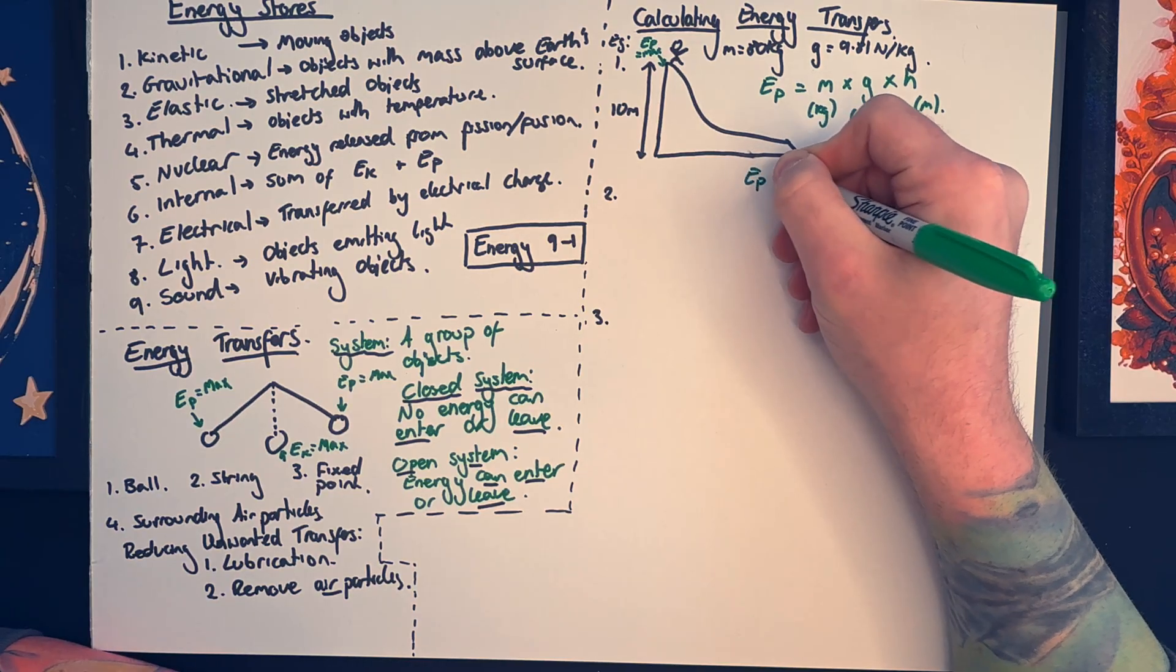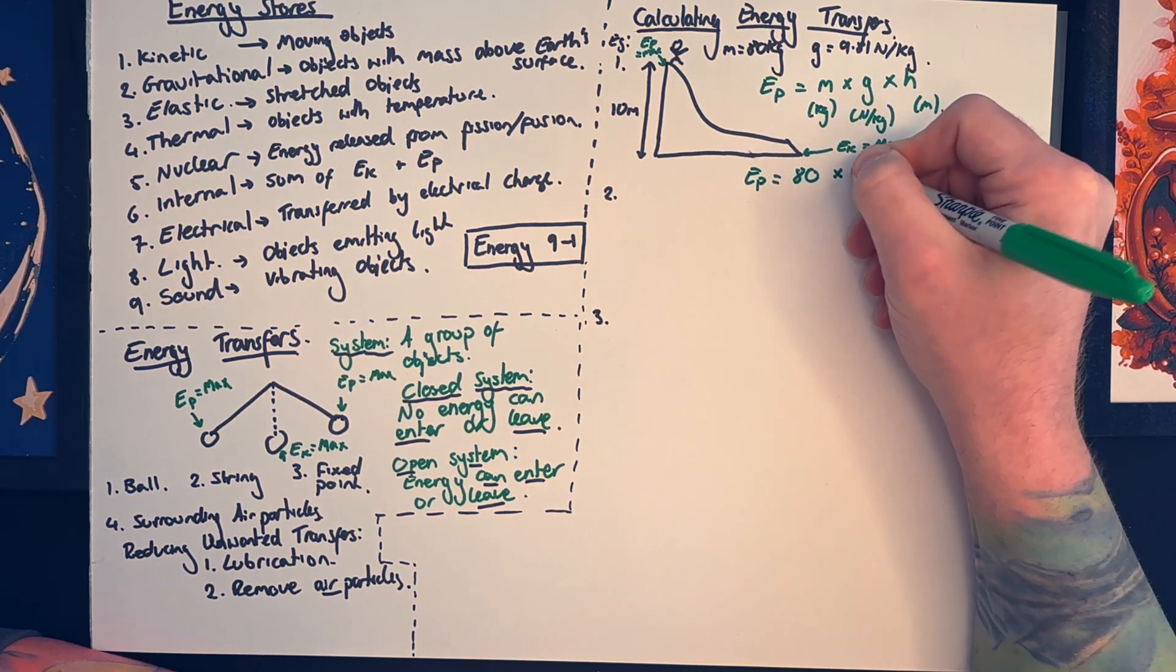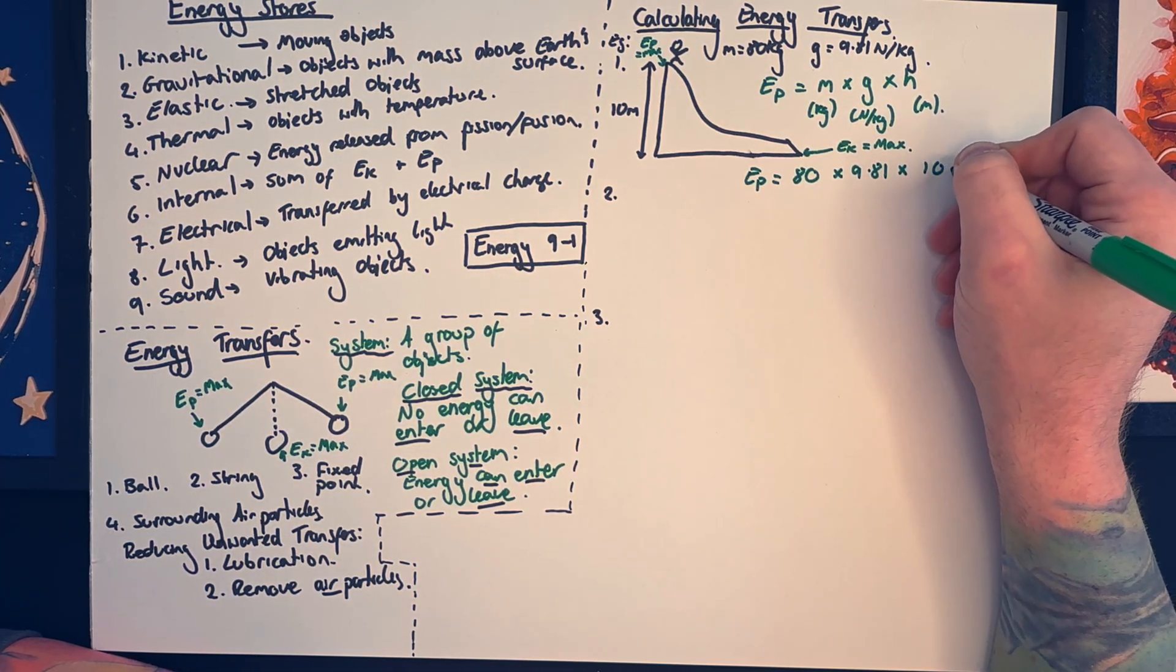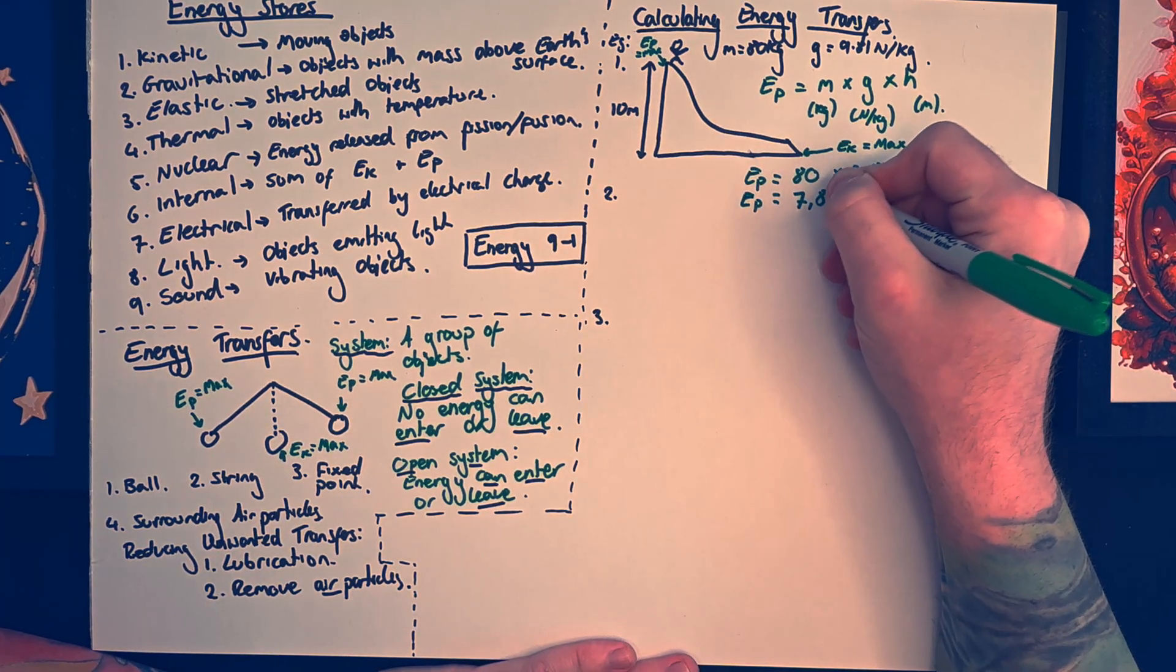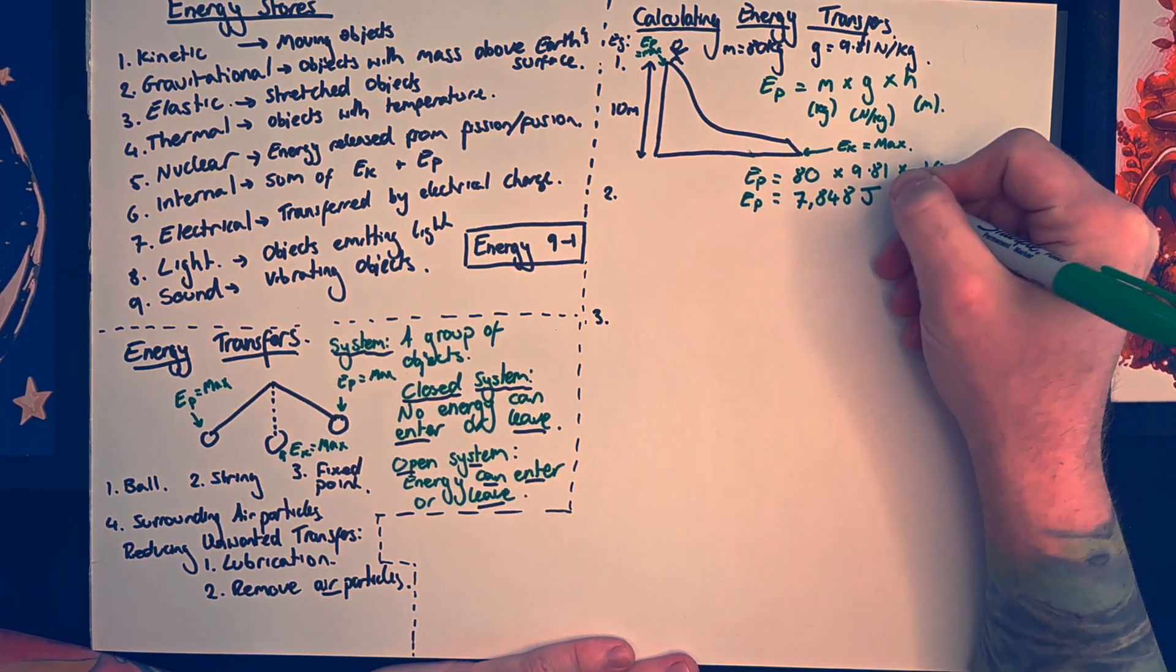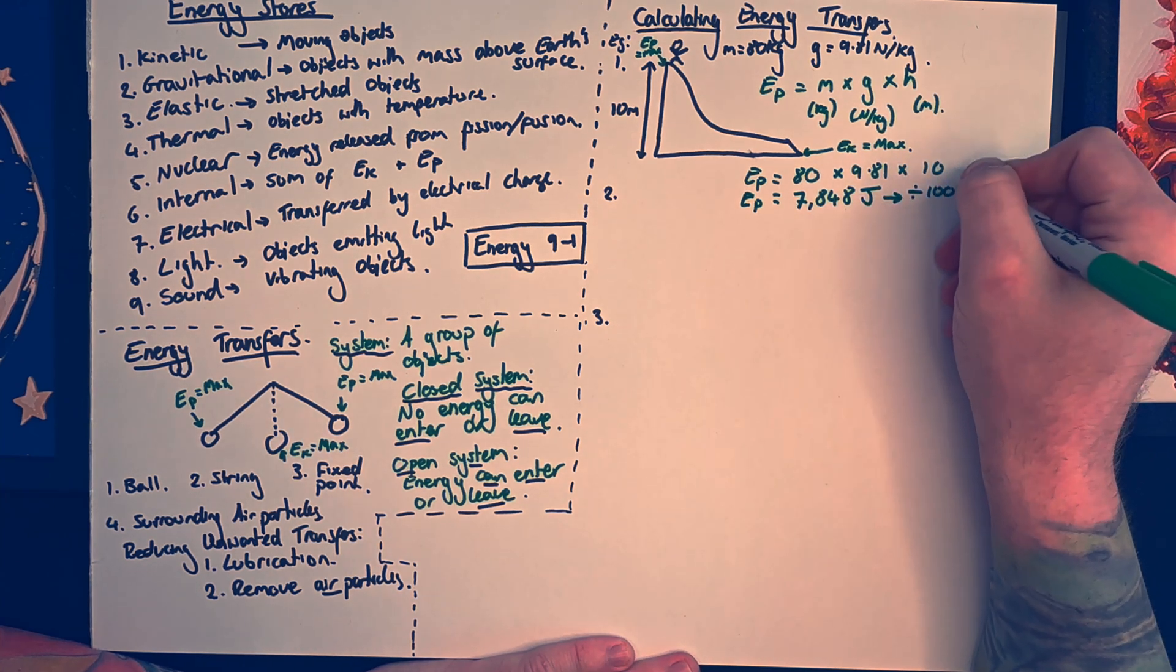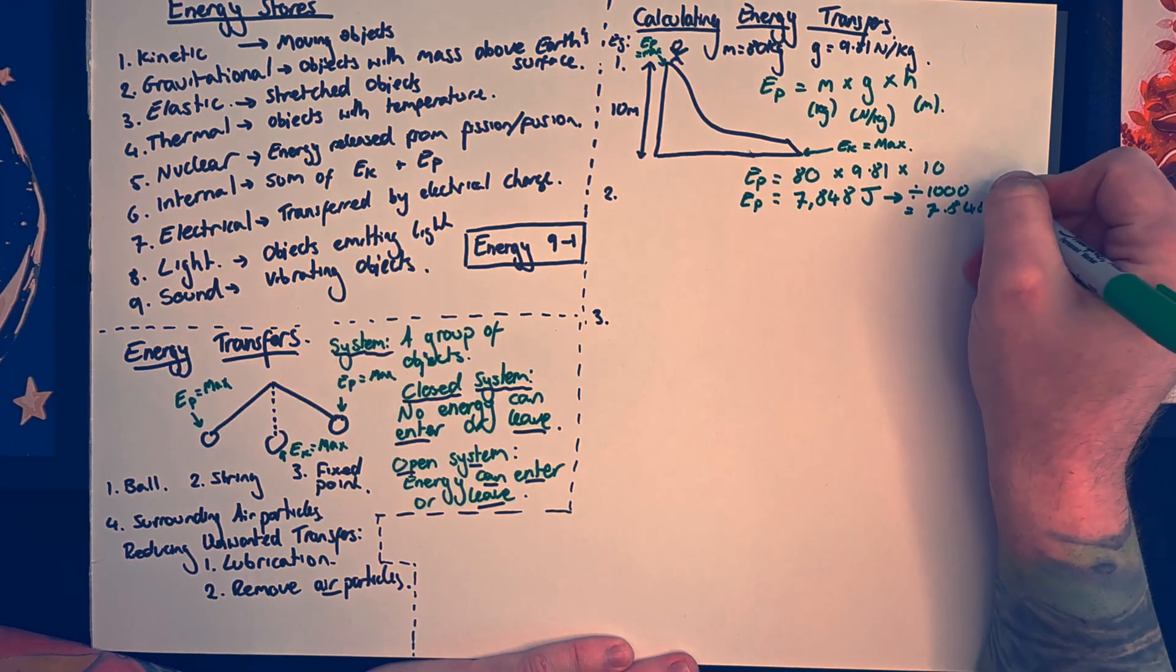All right, so I'm going to start by substituting the values into the equation. So substitute the values in: mass gets replaced for 80, gravity gets replaced for 9.81, and height in this case was 10 meters. Times those three numbers together on a calculator gives us the gravitational potential energy of 7,848 joules. Now I can divide that by a thousand to convert that into kilojoules, and that would give me a value of 7.848 kilojoules.